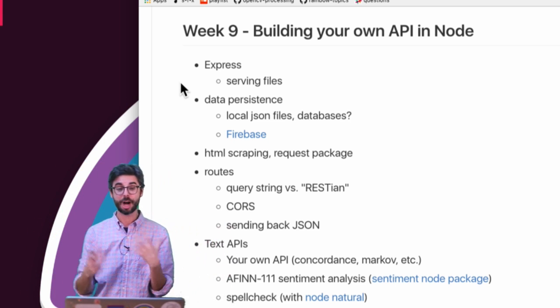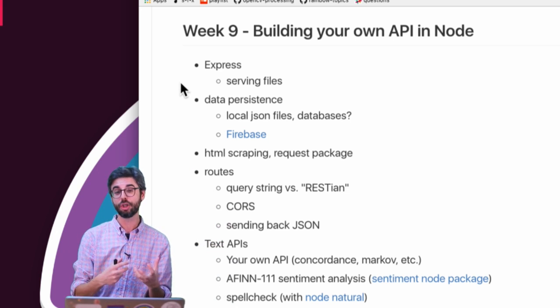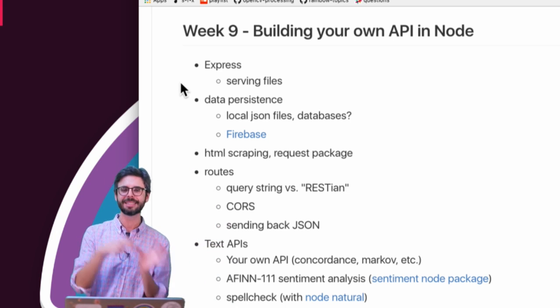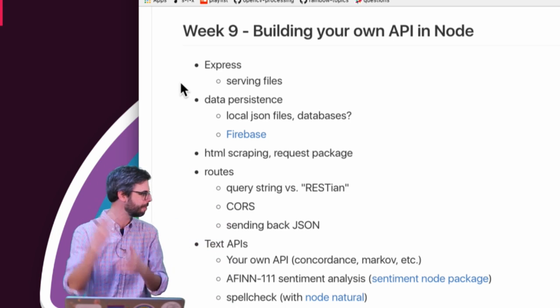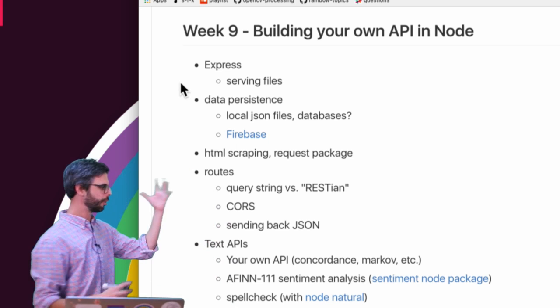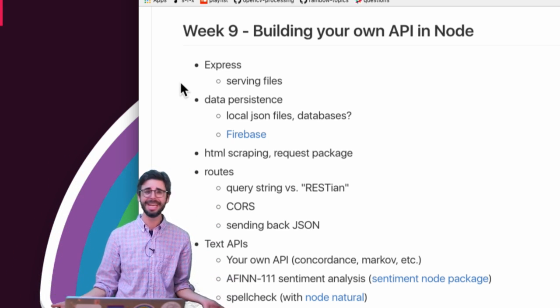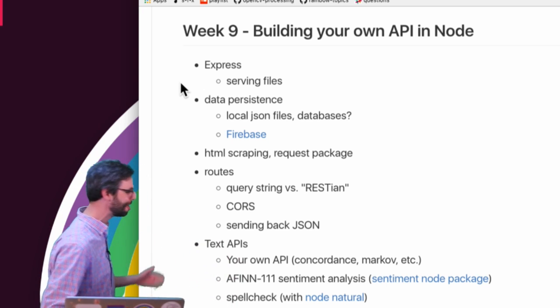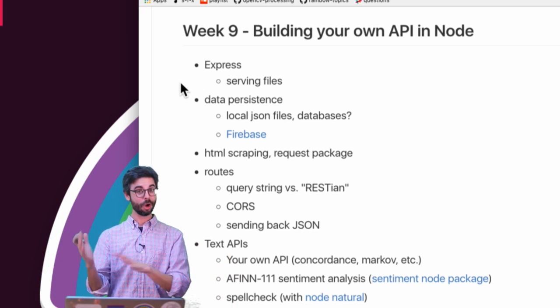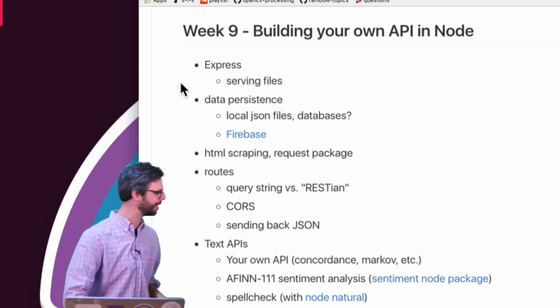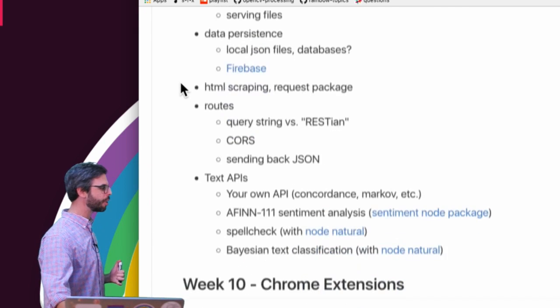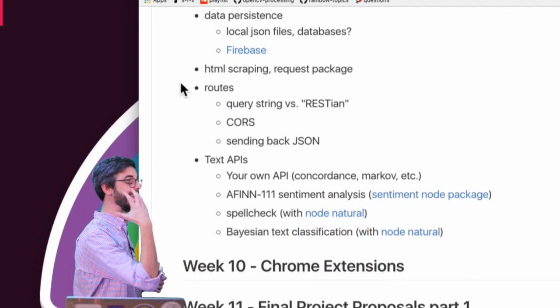I want to look at some point at scraping other web pages. So how could you grab an image and then pass that to p5.js or an HTML page. There's a lot of topics here about making an API. There's this thing called REST. I don't even know what that is, but we'll try to figure it out together. There's this thing called CORS, cross origin resource sharing, which I think I do know what it is.